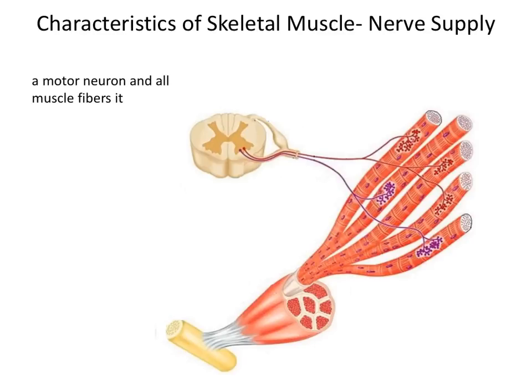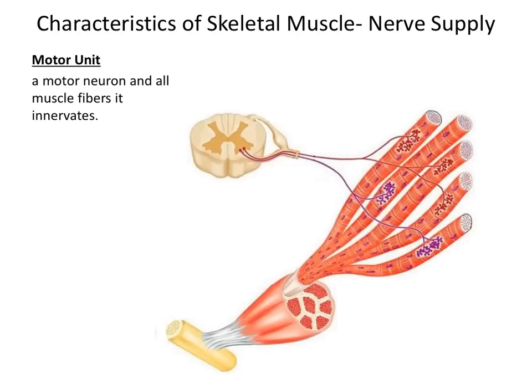A motor neuron and all of the muscle fibers it innervates is called a motor unit. The word innervate means connects to and stimulates. So another definition of a motor unit: it's a motor neuron and all of the muscle fibers that it connects to and stimulates. In the illustration shown here, there are two motor units. The first motor unit includes the red motor neuron and three muscle fibers that it innervates, and the second motor unit is controlled by a purple motor neuron and the two muscle fibers it innervates.